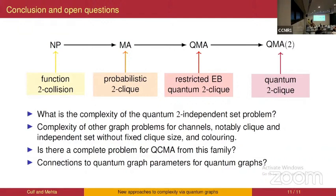Thank you for your interesting talk. Any questions? There were known QMA2-complete problems — the one I mentioned is the sparse separable Hamiltonian problem — but as far as I know, the way known QMA2-complete problems relate to QMA-complete problems was sort of unclear. I think this work gives a natural problem that you can interpolate between QMA and QMA2.